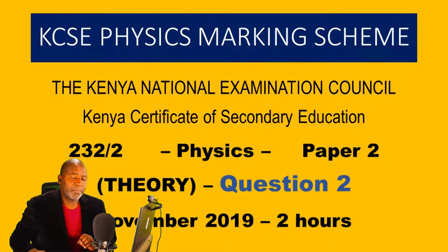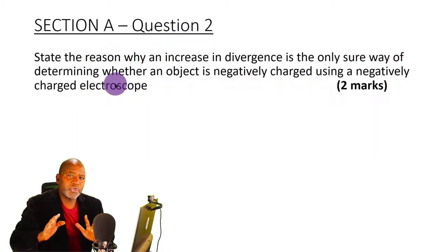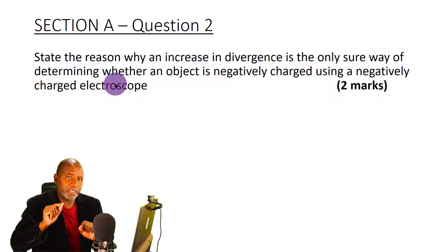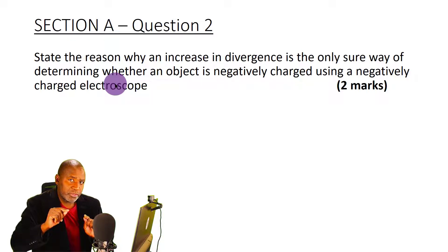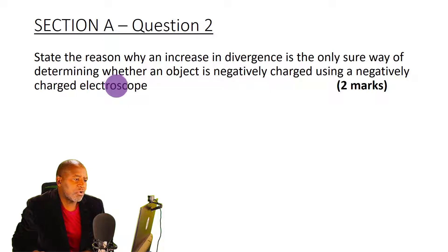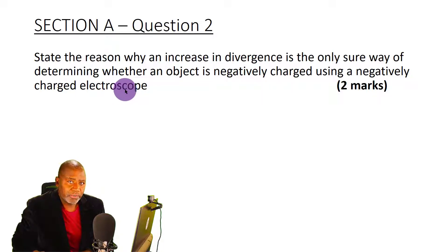In question two, I'm going to explain why repulsion between two charged bodies is the only sure test of the sign carried by a certain body - the only sure test that the body is charged. The question asks us to state the reason why an increase in divergence is the only sure way of determining whether an object is negatively charged using a negatively charged electroscope.